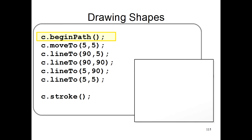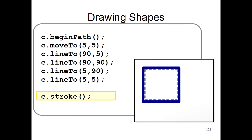We start with beginPath to say that we're going to start drawing some lines. We then move to somewhere. We tell the computer the four lines that we want to draw. Then we use the command c.stroke to actually draw the square's outline.